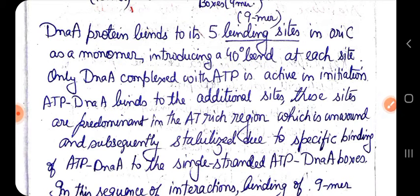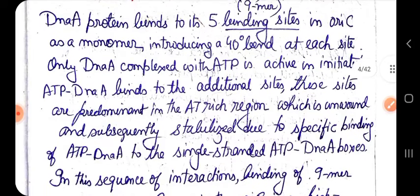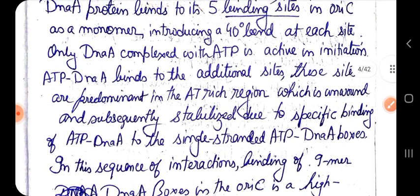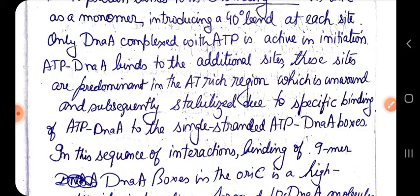DnaA protein binds to the 9-mer regions in the oriC as monomeric units — single units. DnaA protein binds to these five binding sites in the oriC as monomers, and by binding to the DnaA box it causes a 40% bend in the DNA, bringing DnaA close to the AT-rich region.